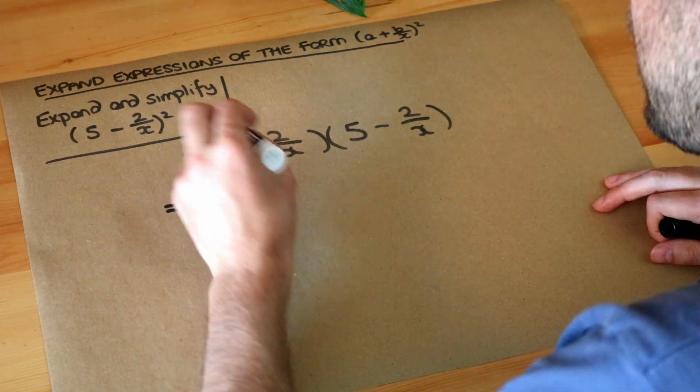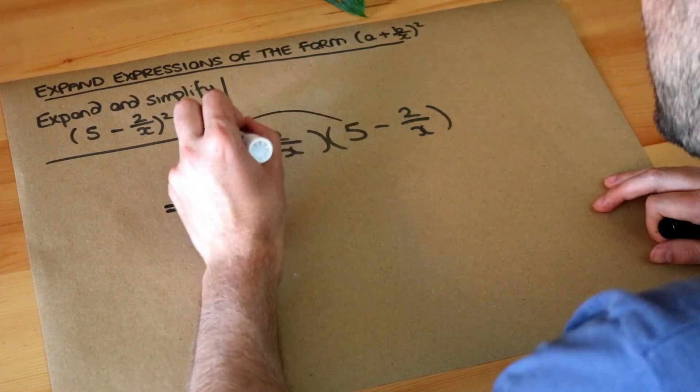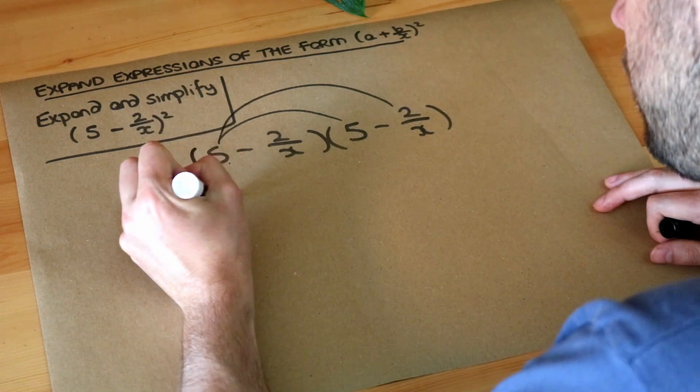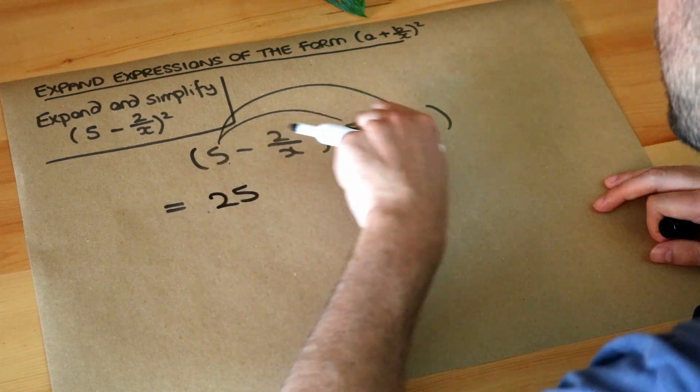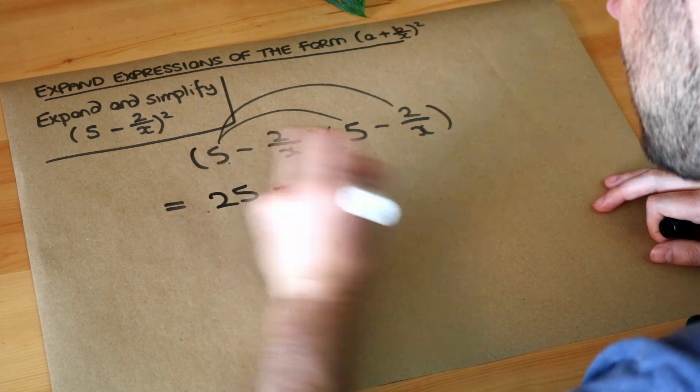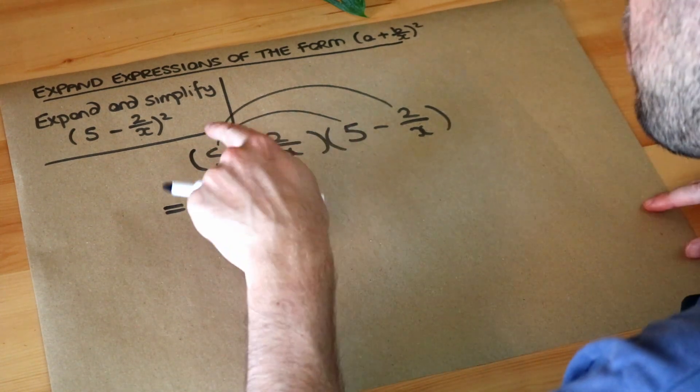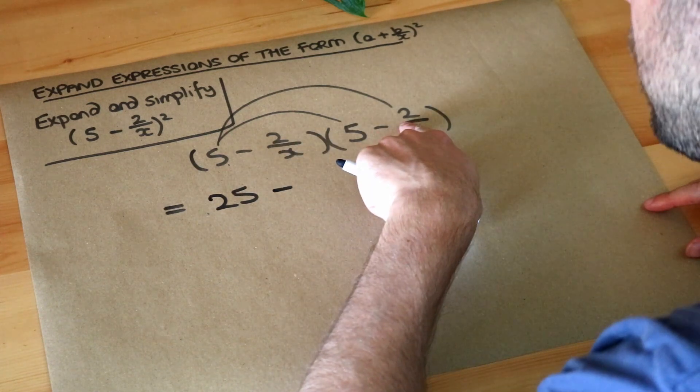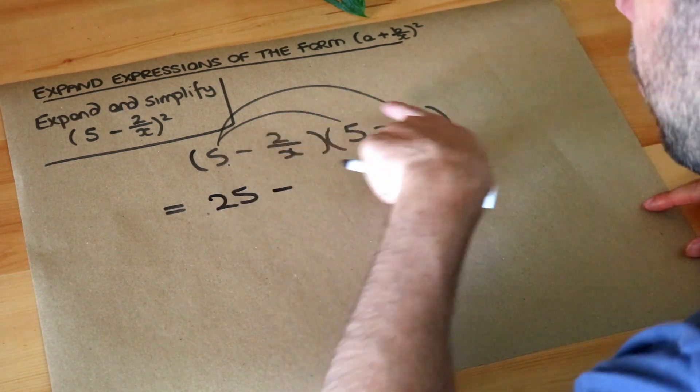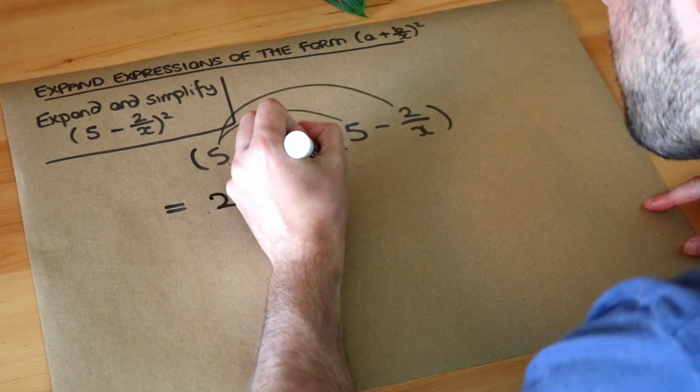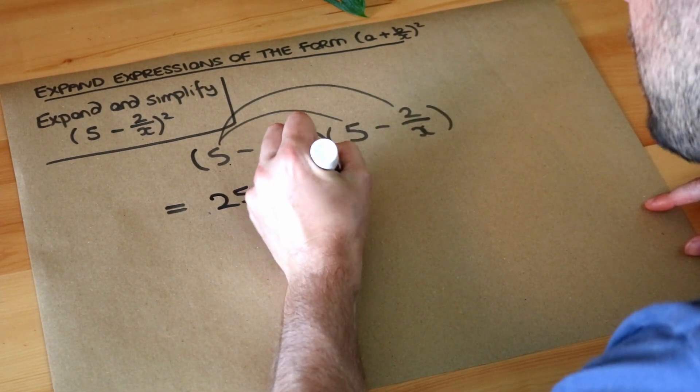So we do the first thing in this first bracket multiplied by each of the things in the second. We do 5 times 5 which is 25, and we've got 5 times negative 2 over x. Well positive times negative is going to be negative. Now when we multiply a whole number by a fraction, the 5 only affects the top of the fraction, so the 5 gets multiplied by that 2 to give you 10 but the denominator remains the same.